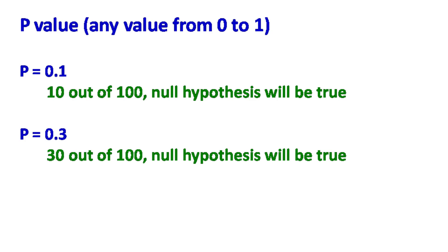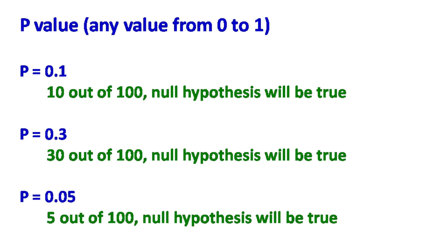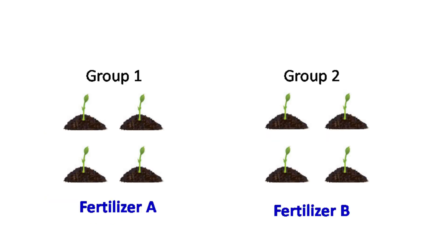Let's say the p-value is 0.05 — this means if I repeat the experiment 100 times, only five times the null hypothesis is going to be true. Now let's take an example of the t-test. The t-test is used for the comparison of means.